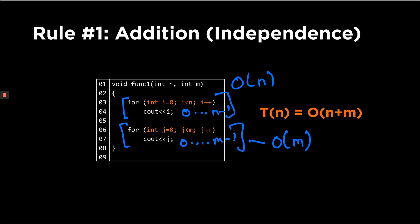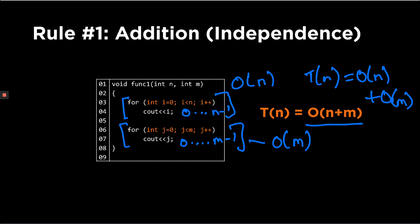If we were to analyze the total complexity of the program T(n), we could basically sum O(n) with O(m) to get this equation, and this could be further simplified to O(n + m).